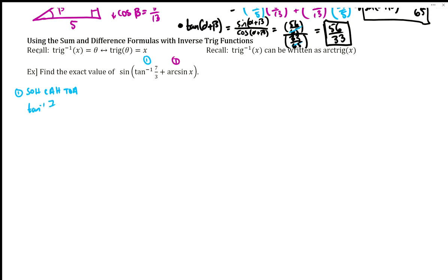So tangent inverse of seven-thirds is some angle. Remember inverse trig gives us angles, so I'm going to use capital A for the angle and rewrite it. So I have tangent of angle A is seven-thirds, and now I can do SOHCAHTOA. I can make my right triangle with angle A and I have opposite over adjacent.